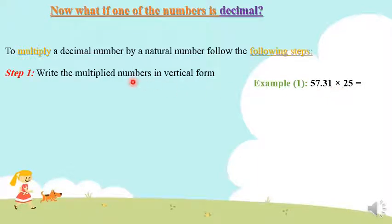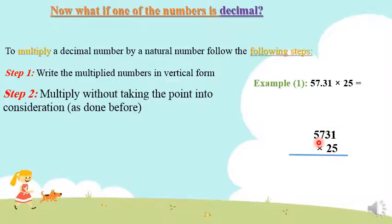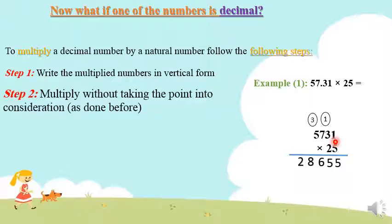Step 1: write the numbers to be multiplied in the vertical form. As usual, when multiplying any two numbers, we write them in the vertical form. Step 2: multiply without taking the decimal point into consideration. I didn't put the decimal point — I'm ignoring it. Let's multiply as if there is no decimal point. We start with the ones digit and multiply it by the first number. So multiply 5 times 1 is 5, 5 times 3 is 15, carry 1. Then 5 times 7, then 5 times 5, and write the answer. When moving from the ones to the tens, put 0 or leave an empty digit.